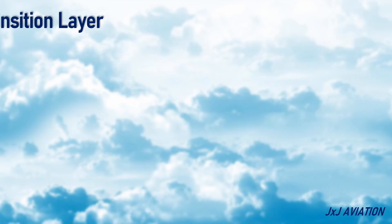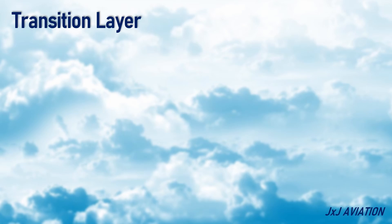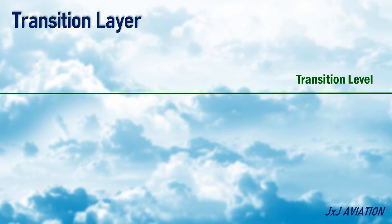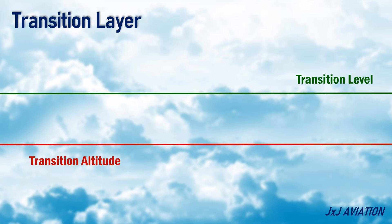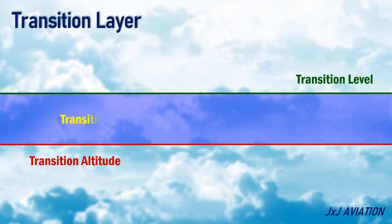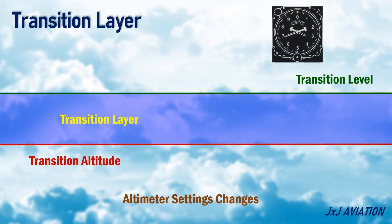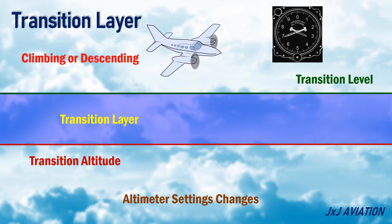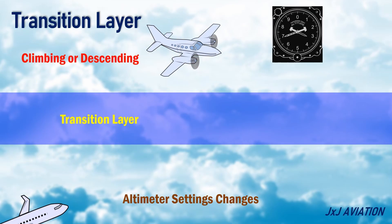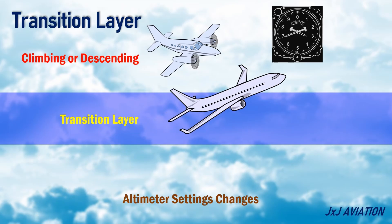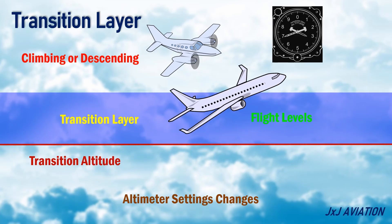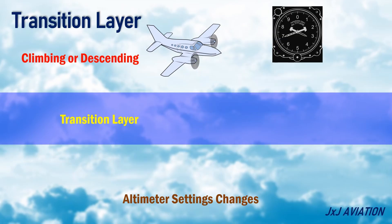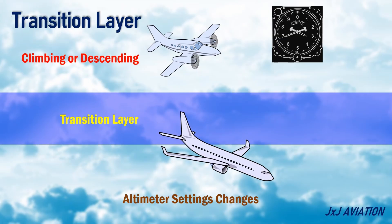The transition layer: We previously saw the transition level and transition altitude. The region between these is called the transition layer. The changes in the altimeter settings happen in this layer, and it depends on whether the aircraft is climbing or descending. When an aircraft is climbing, the vertical position is given in flight levels above the transition altitude. When an aircraft is descending, the vertical position is given in altitudes below the transition level.